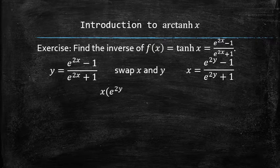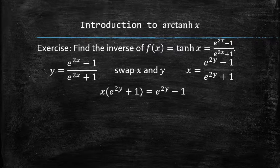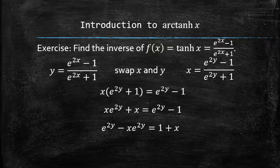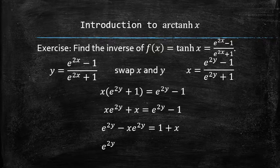We multiply both sides by the denominator. Then we distribute everything on the left-hand side. We combine the like terms and we factor the left-hand side.